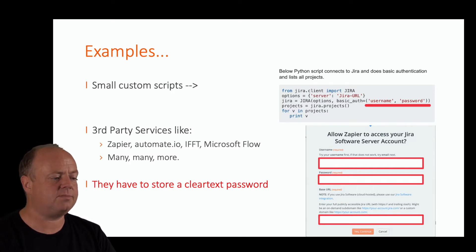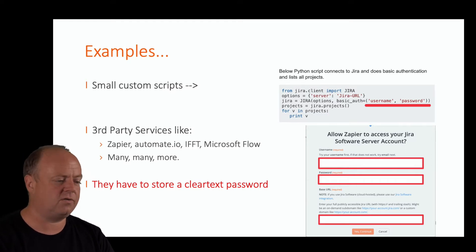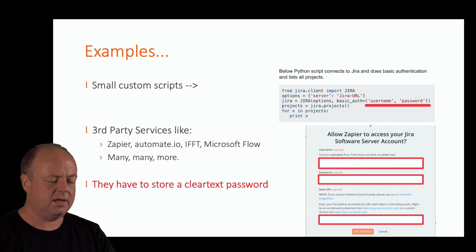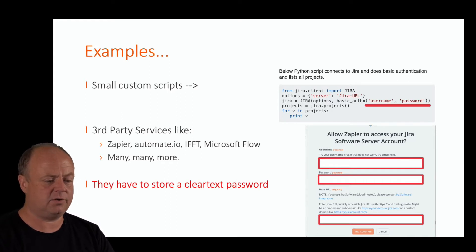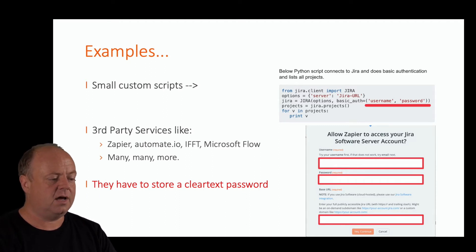Or if I use third-party services like Zapier, Automate.io, IFTTT, Microsoft Flow, or many more, they generally ask me for the username, password, and the base URL of my Jira server in order to access it.